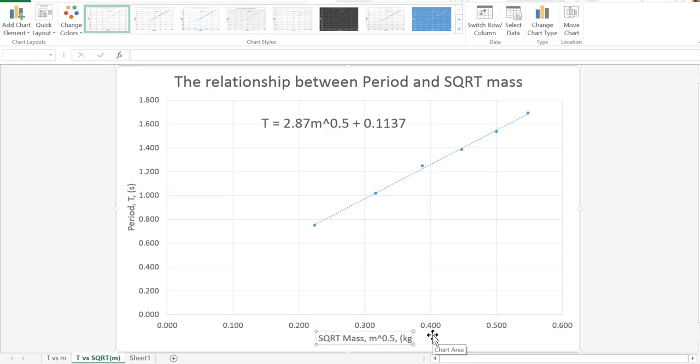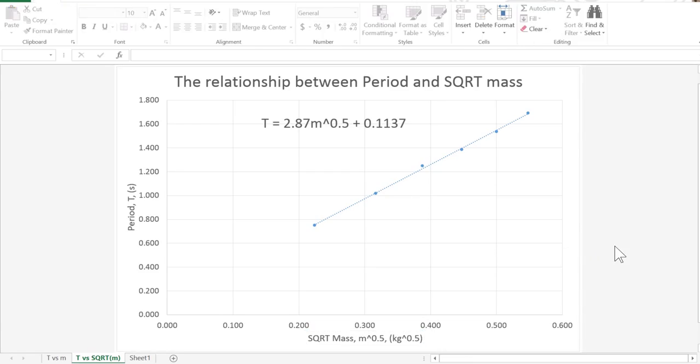Square root kilograms can be written as kilograms to the power of a half. And that completes my graph with the correct axes labels. From this point forward,